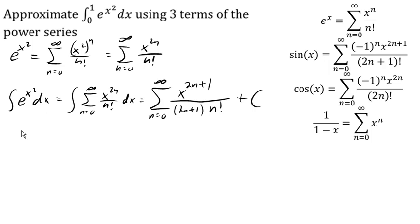So now for the definite integral from 0 to 1 of e to the x squared dx, that would be this series evaluated at 1 and at 0 and then finding the difference. So that would be the sum from n equals 0 to infinity,